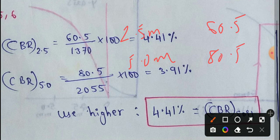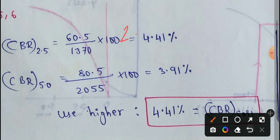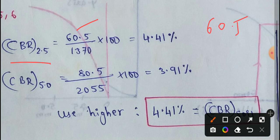I am going to show the formula. The CBR 2.5 formula: P at 2.5mm is 60.5kg, and P at 5.0mm is 80.5kg. The standard P value at 2.5mm is used in the calculation.